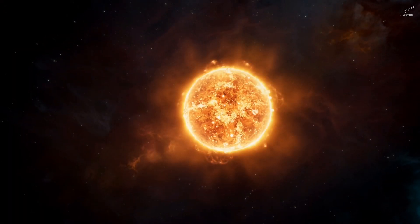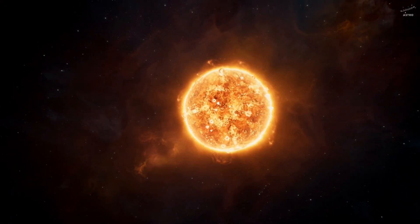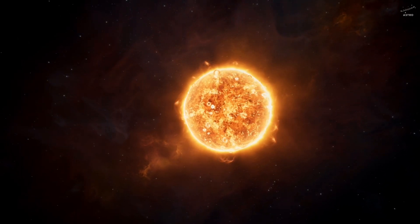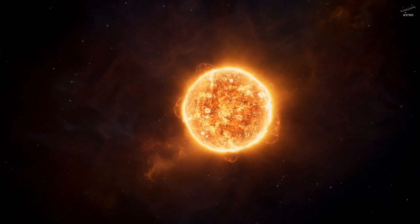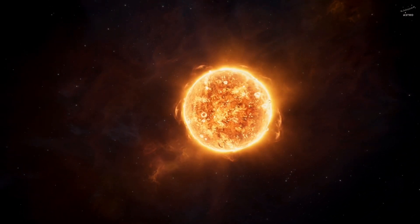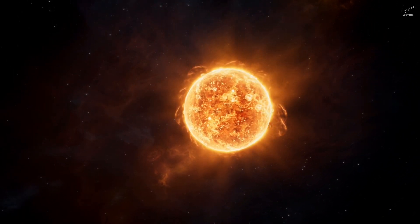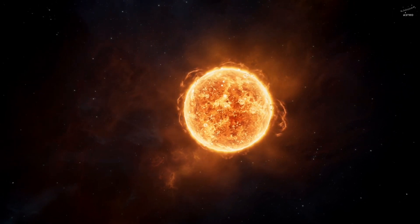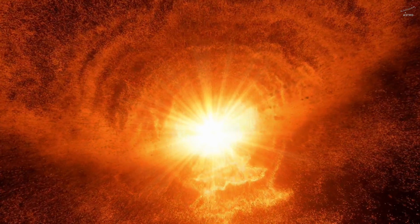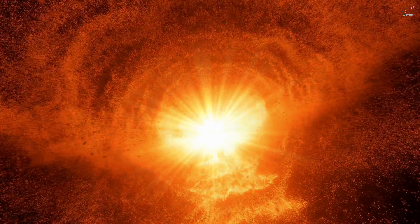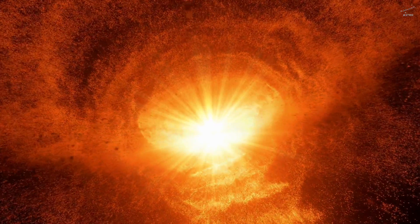Right now, the sun is in its calmest state. Deep in the core, nuclear fusion continues. Hydrogen turns into helium, and in the process, vast energy is released. But that fuel won't last forever. In about 5 billion years, the core's hydrogen will run out. And when it does, everything begins to change.